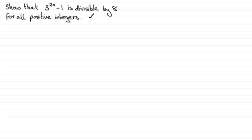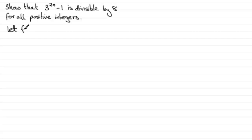Like all induction problems we have to show that it's true when n equals 1. Then we assume it's true for n equals some value k and go on to prove that it's true for n equals k plus 1. On that basis if it's true for n equals 1 it'll be true for n equals 2, 3, 4 and so on. When doing these divisibility tests we handle them slightly differently. What we tend to do is define a function — let f(n) equal 3 to the power 2n minus 1.